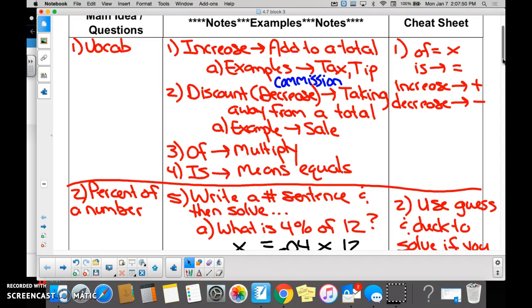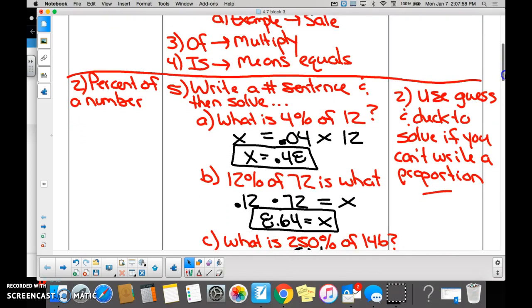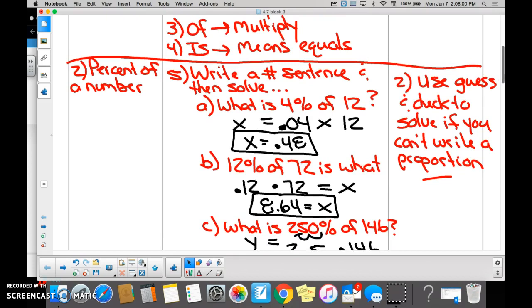Give me another name for a discount. Number sentences. We wrote number sentences basically using every single word of this particular sentence. What does 'what' mean? It's what we don't know, right? So we wrote a variable. Of this is... What does 4% mean? It means 0.04. Can you calculate with percent? Therefore they need to be turned into decimals.